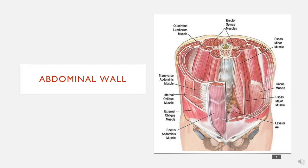The abdominal wall is essentially everything that keeps your viscera in. Most of it is muscles and some of it is the lumbar vertebrae, and I'll come on to why this is relevant clinically.